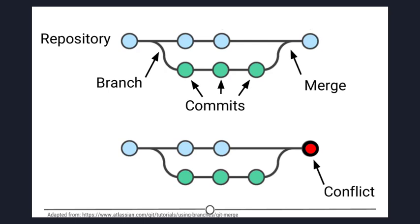So conflict is when multiple people make changes to the same file and Git is unable to merge the edits. You are presented with the option to manually try and merge the edits or to keep one edit over the other. Clone is making a copy of an existing Git repository.